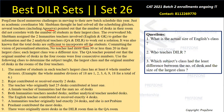Each largest class was of a different size. The QA teacher pointed out that the original number of desks in the four rooms were four consecutive numbers.